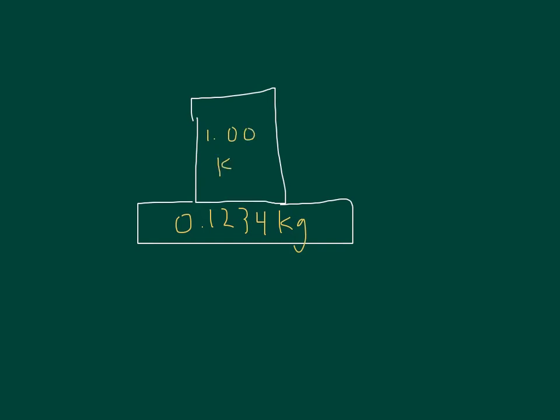Now that we've done our conversion, we're going to just quickly resketch the free body diagram with our converted mass. So our wooden block with our one kilogram mass sitting on top. 0.1234 kilograms is the wooden block, the one kilogram mass sitting on top.